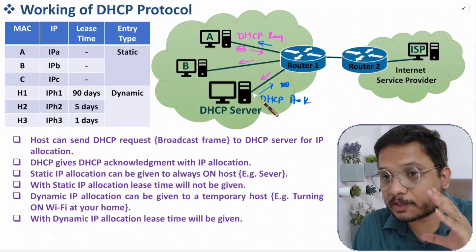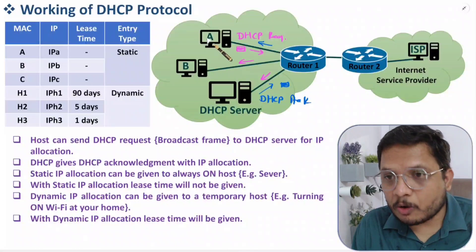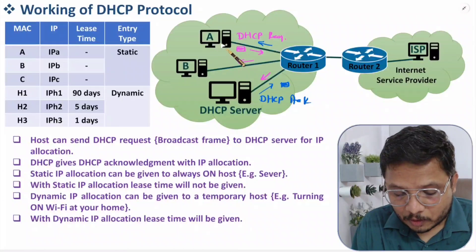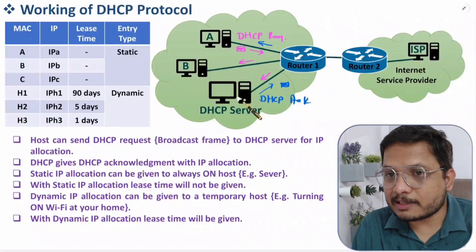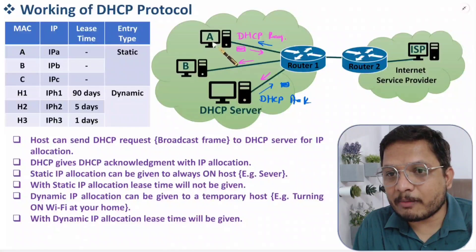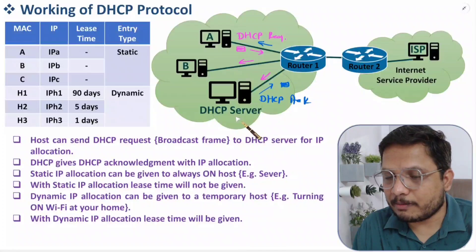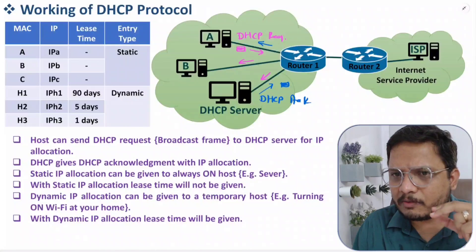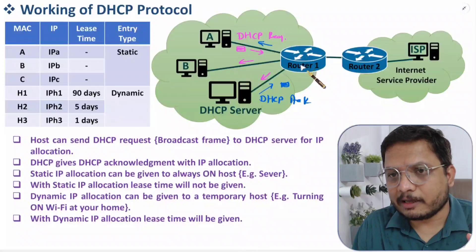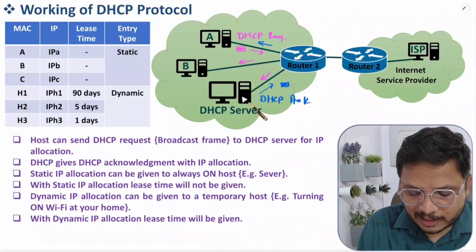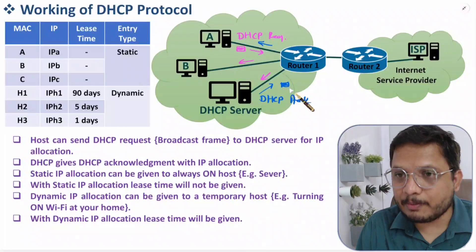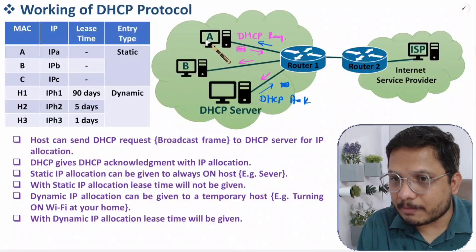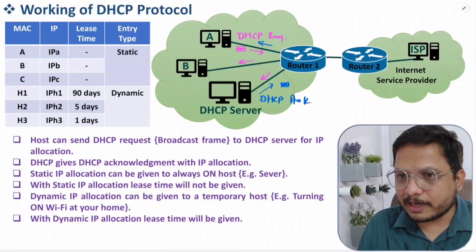I'll show you how many data fields are there in the acknowledgement practically. Right now, first understand what is happening: the host newly coming into the network asks for an IP address first, so DHCP request is broadcasted. The router has the DHCP server — nowadays majority of routers are intelligent enough to have a DHCP server integrated. After that, the DHCP server gives an acknowledgement containing the IP, and that IP is assigned to this host. Now this host can use that configured IP for communication in the entire computer network.